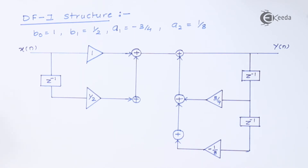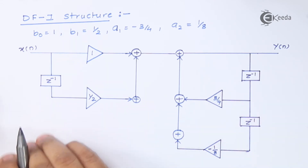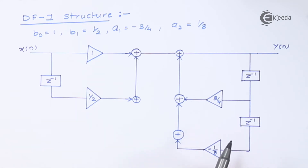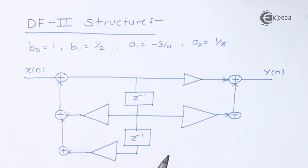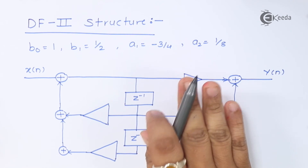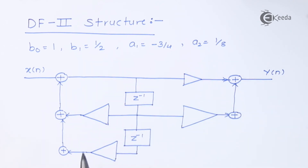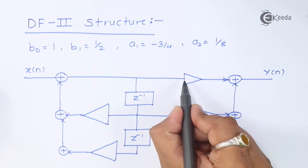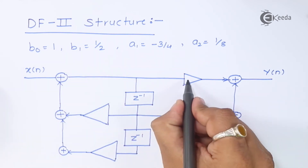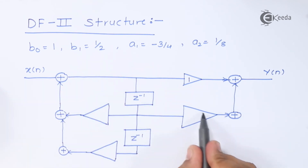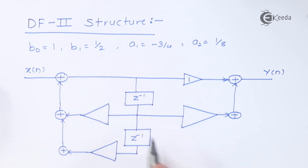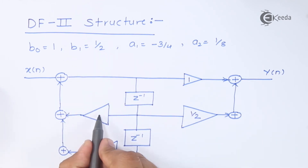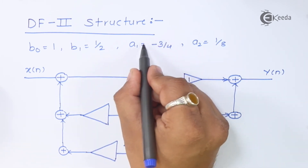Now we plot the Direct Form 2 structure. In DF2 we require fewer memory elements — here only 2 memory elements compared to 3 in DF1. In the DF2 structure, b values are placed on the right-hand side and a values on the left-hand side. The first block on the right gives b₀ which is 1, and the second block gives b₁ which is 1/2.